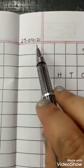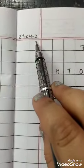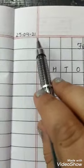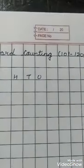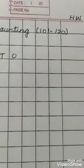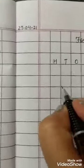Let us start. Write down the date on the top left corner in the block only, and HW — that is homework — on the top right corner. So, let us start.